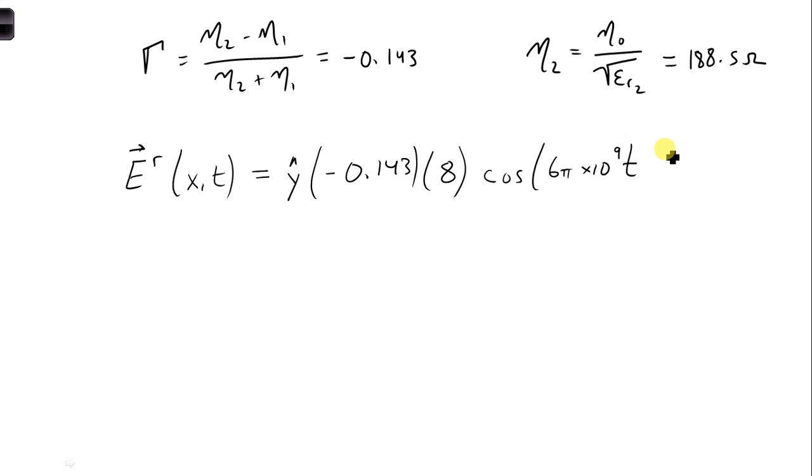But we do have a change in the direction of propagation. Now the reflected wave is propagating in the minus x direction, and so the sign here has to change to plus, and k does not change. So it's still 30 pi x, and we can say volts per meter.